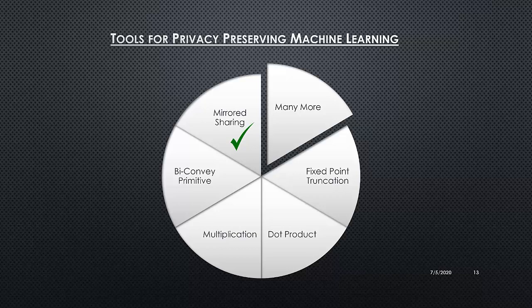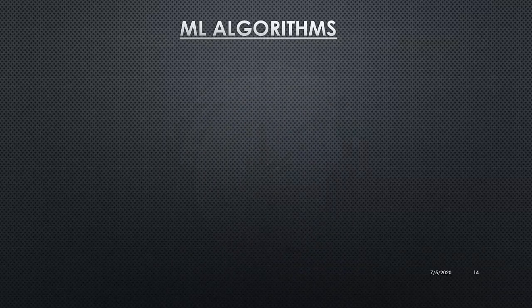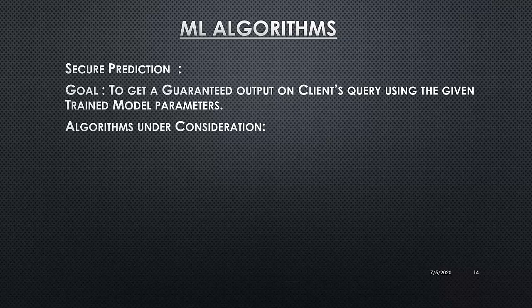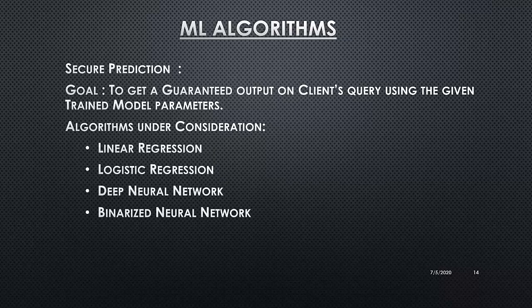For the rest of the slides, I will talk about our mirrored sharing format, then our BiConvey primitive, then use these two to build our multiplication protocol and extend it to our dot product protocol. The ML algorithms we consider in this paper focus on secure prediction — given a query, we want the output based on trained model parameters. The algorithms under consideration are linear regression, logistic regression, deep neural networks, and binarized neural networks. In this presentation I'll talk about linear regression, which under the hood simply uses the dot product protocol.